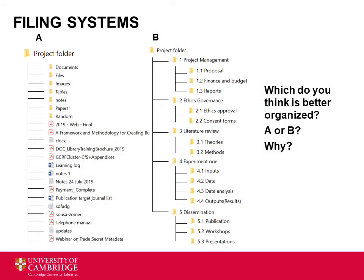Most often you will organise your data using some sort of filing system. Take a look at the two project folders on this slide — which one looks more organised to you? B seems like it has been planned out, while A seems quite random. How you organise your files at the start of a research project will shape how they grow and develop, and whether they will stay organised over time. Think about organising your files in a way that makes sense to you now and will continue to make sense six months or a year later. You can follow a similar structure to B on this slide, or create your own.